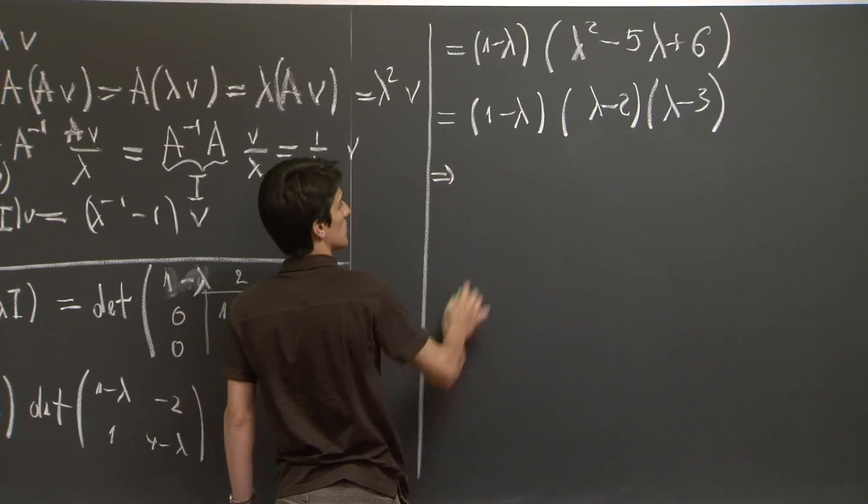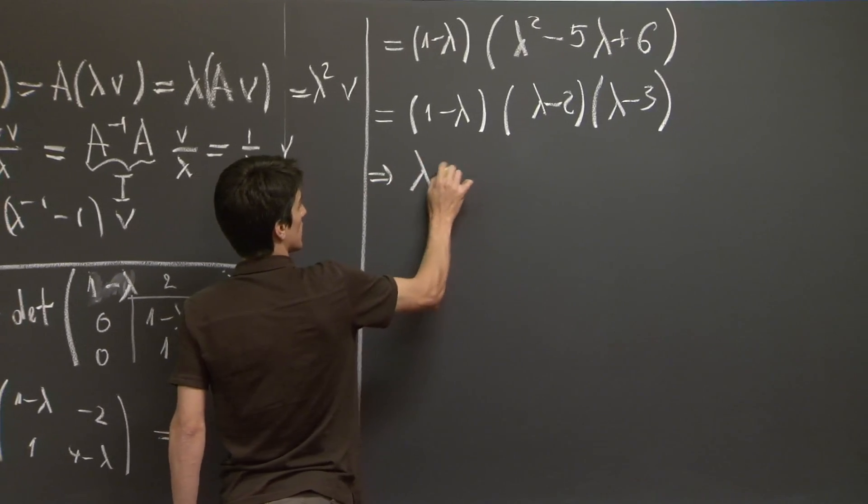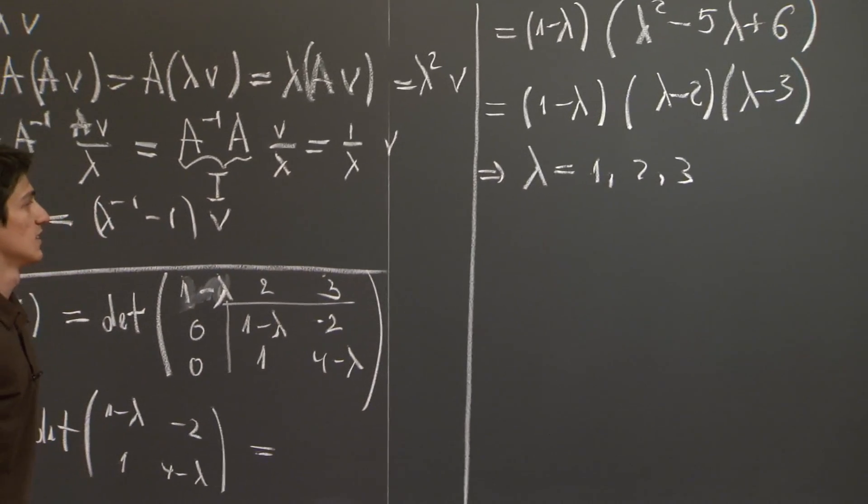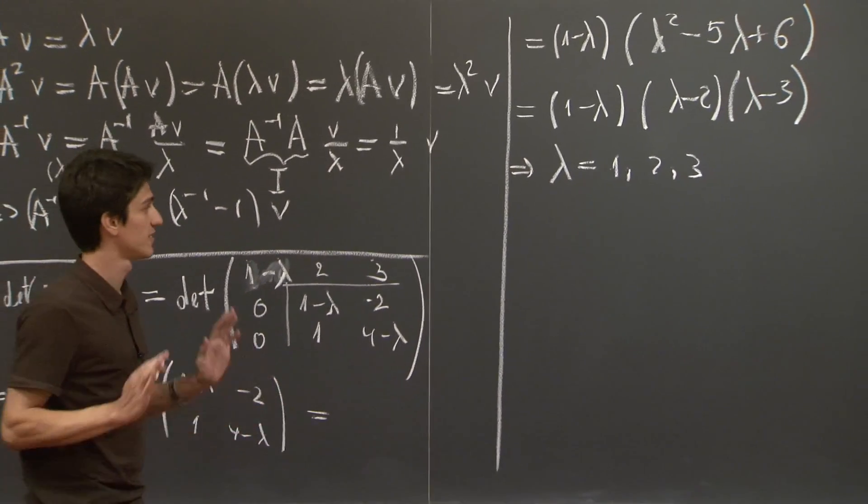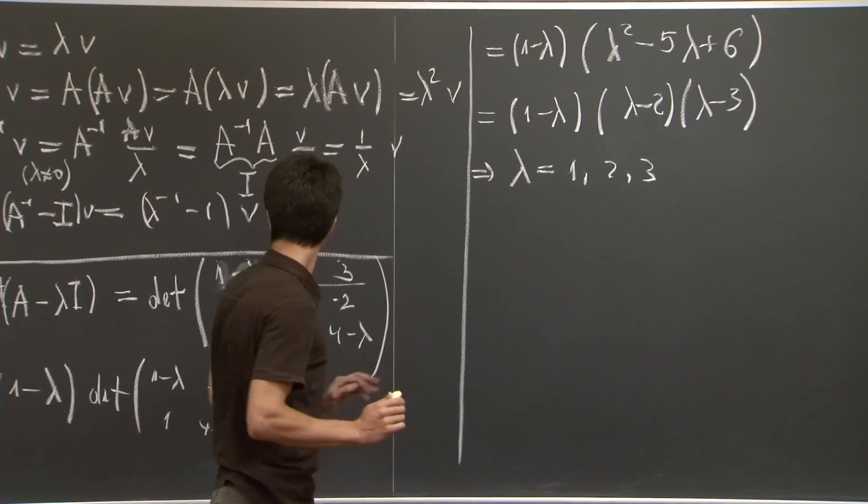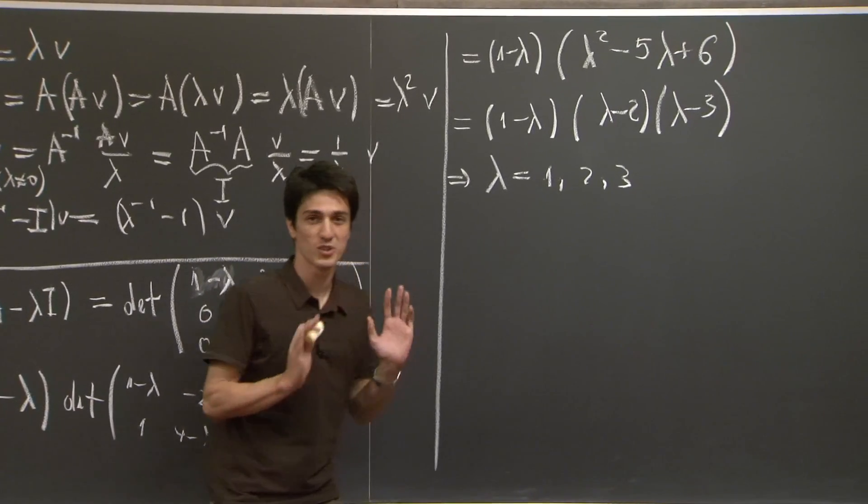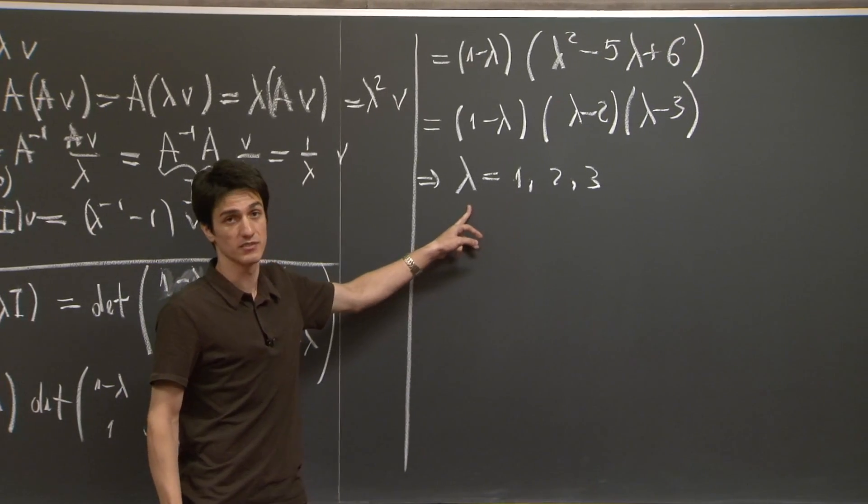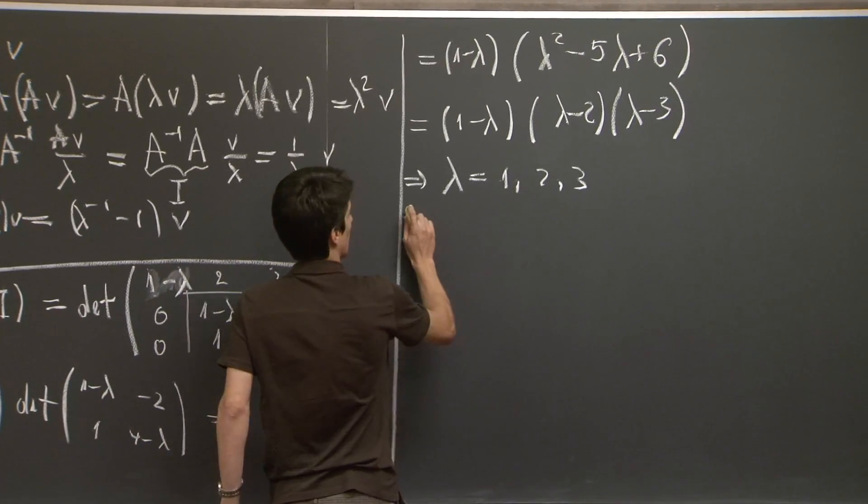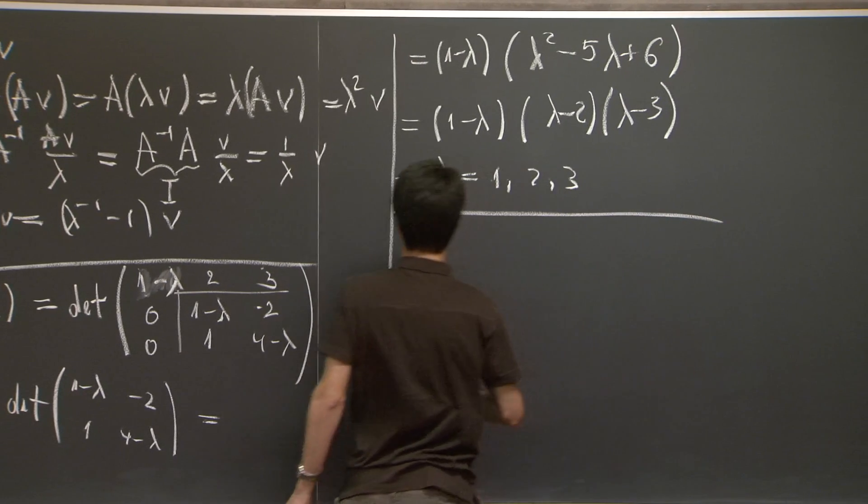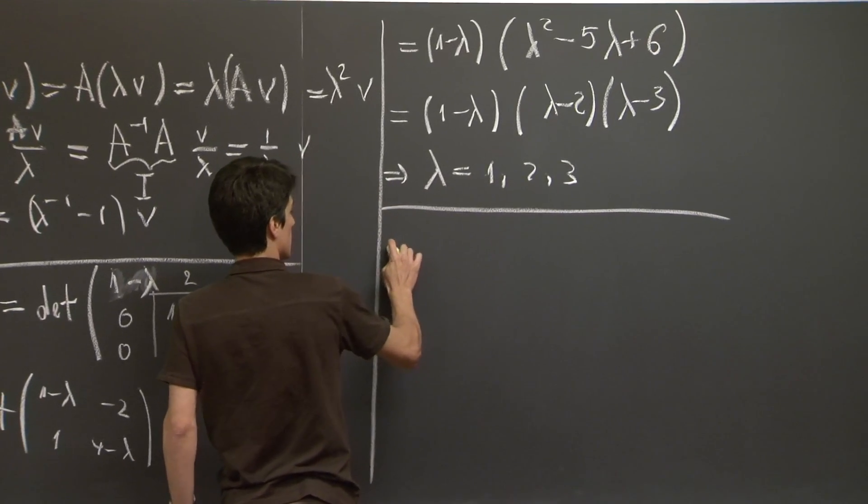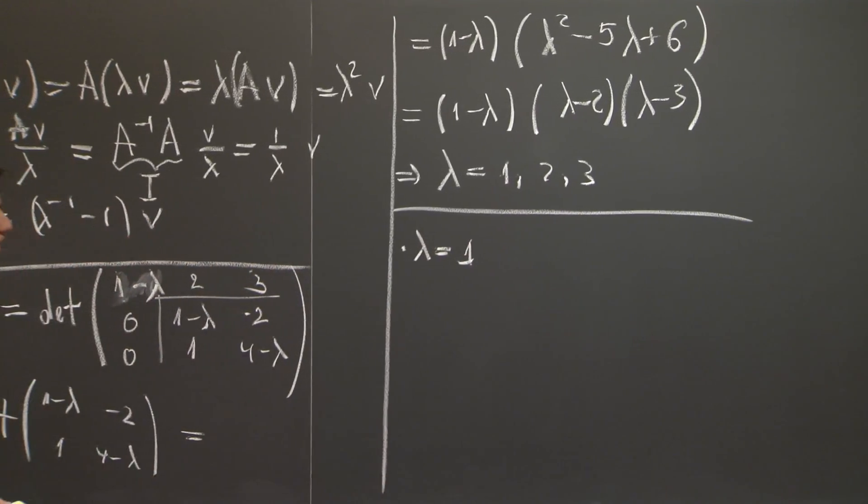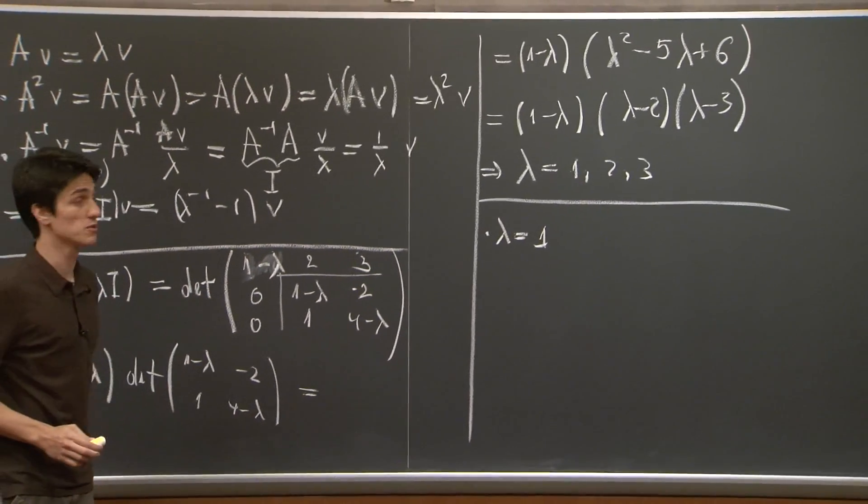So the three eigenvalues of A are 1, 2, and 3. So first half of our problem is done. Now, we just need to find what the eigenvectors associated with each of these eigenvalues are. How do we do that?